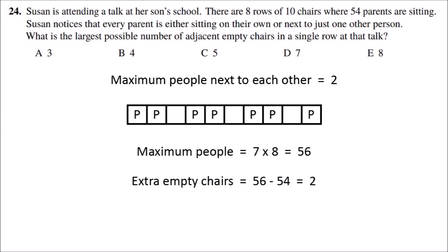So to have the largest possible number of adjacent empty chairs, if the two empty chairs are in the middle, then they would have another empty chair on either side. So that means that there would be four adjacent empty chairs. So the answer is B, four.